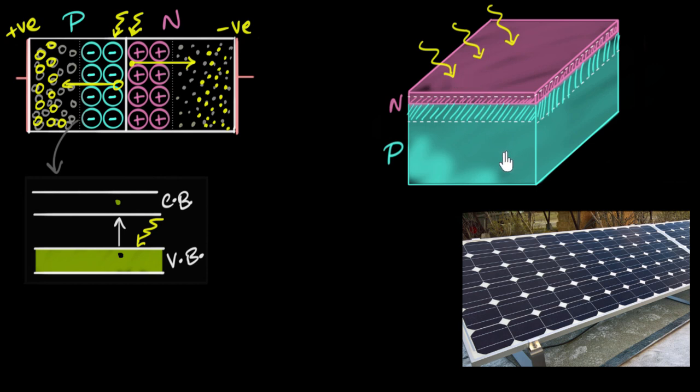One of the ways we can do this is put a very thin wire at the top and a very thick sheet at the bottom, and then attach this to a bulb.